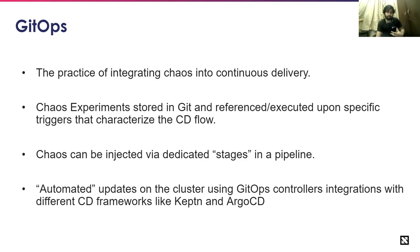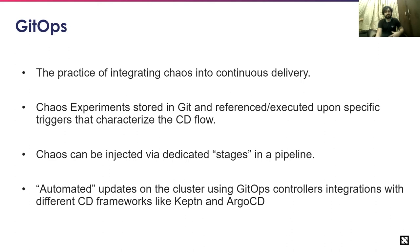GitOps makes the various stages in a pipeline scalable — chaos can be injected via dedicated stages. GitOps controls and integrations are automated with different CD frameworks. Keptn is one such CNCF sandbox project that helps automate clusters using GitOps with a quality-gates-based approach. With Argo CD, you can create chaos engineering workflows where chaos tests run in series or in parallel — conducting multiple chaos experiments simultaneously to make your chaos engineering journey easier.